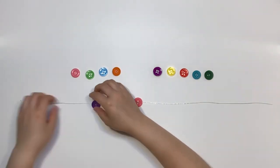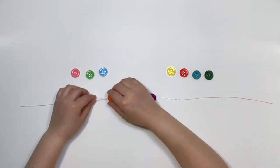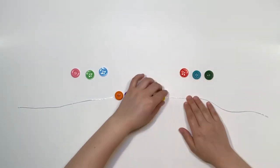Now repeat by feeding in the buttons on each side and bring them towards the middle. Keep doing this until all the buttons are on.